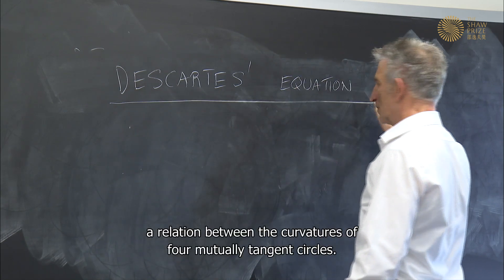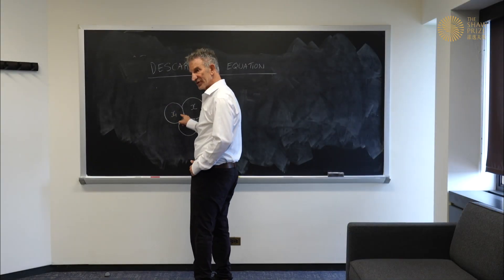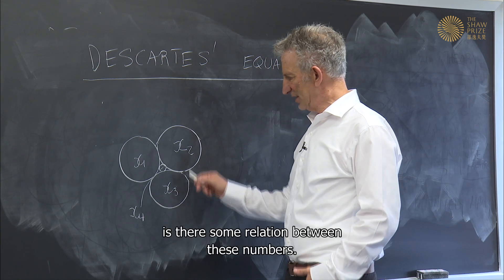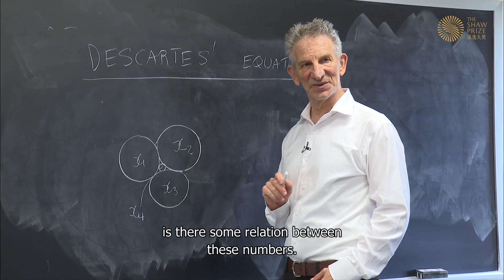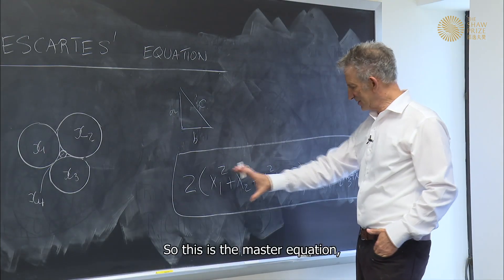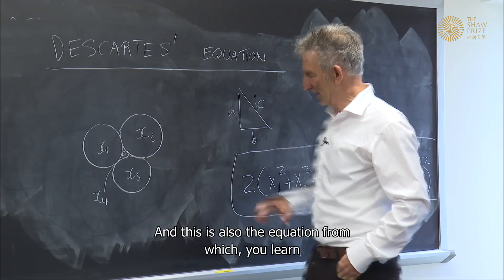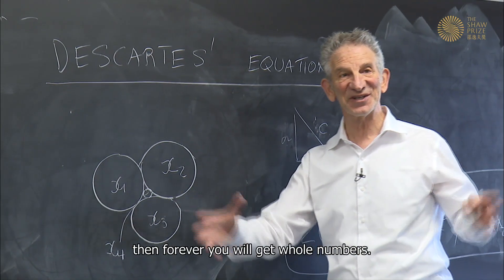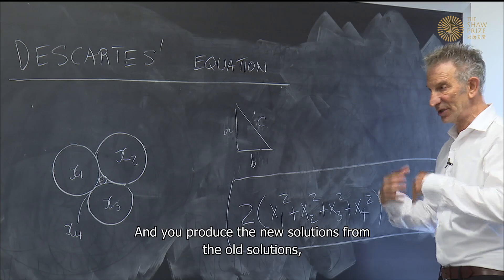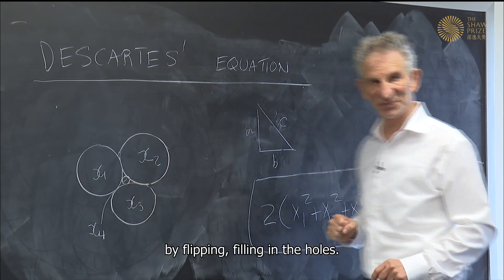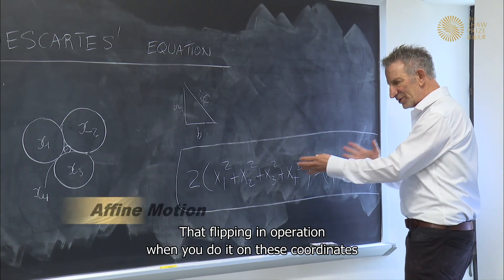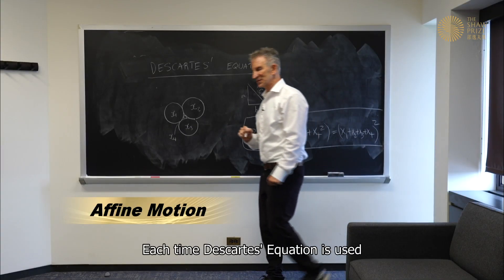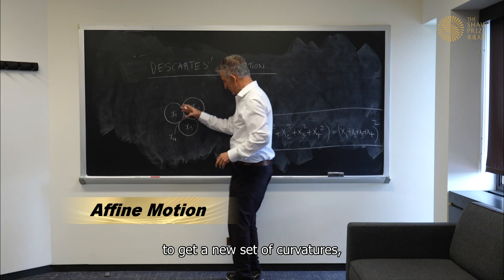Descartes' equation shows a relation between the curvatures of four mutually tangent circles. So, the question is, if I have four mutually tangent circles with curvatures x1, x2, x3, x4, is there some relation between these numbers? And this is Descartes' equation. So this is the master equation which the four must satisfy. And this is also the equation from which you learn that if you start off with four which are whole numbers, then forever you will get whole numbers. And you produce the new solutions from the old solutions by flipping, filling in the holes. That flipping in operation, when you do it on these coordinates, is an affine motion. That's where the word affine comes from.